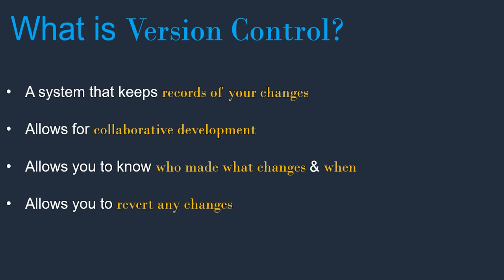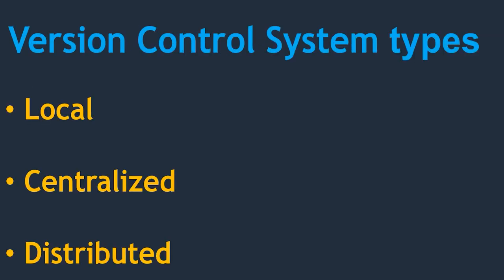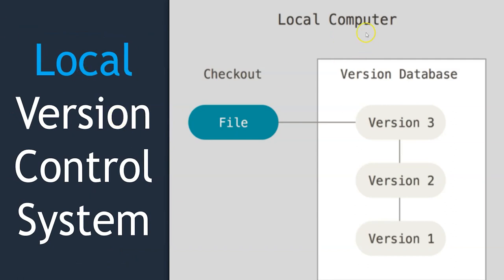The major advantages of a version control system: it keeps a record of changes, allows collaborative development, lets you know who made what changes and when, and allows you to revert any changes. Now let's see the types available. There is local, centralized, and distributed. A local version control system works on your local computer — you can track changes on your laptop. Each time a file is modified it is recorded with what changed and when, always pointing to the latest update. But it only works for a single developer and doesn't solve the collaboration problem.